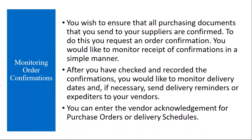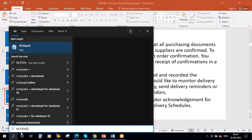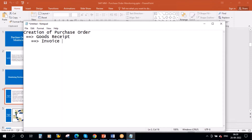Let me explain how it works. In the previous purchasing cycle we discussed, we create a purchase order, then the supplier supplies the material, we receive the goods (goods receipt), and the next step is invoice verification. But in between, you want to have one more step: purchase order acknowledgement.